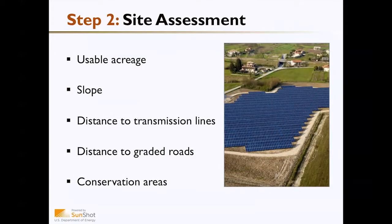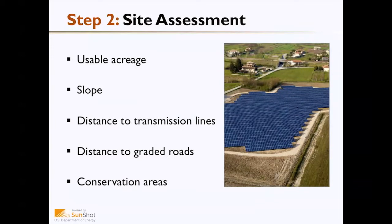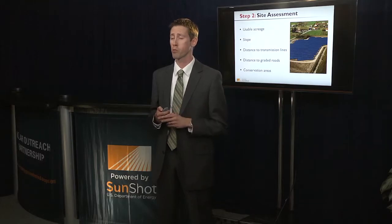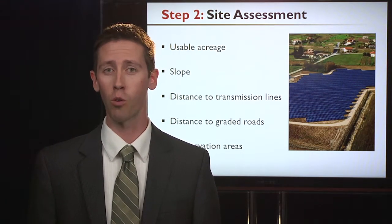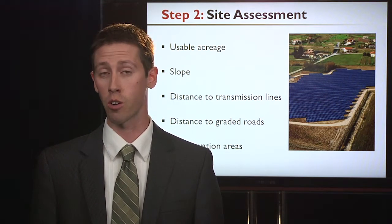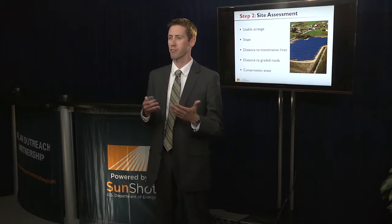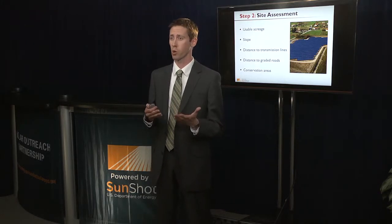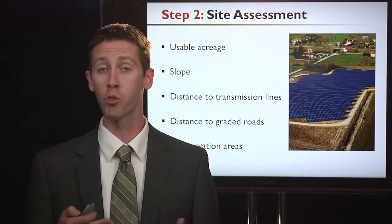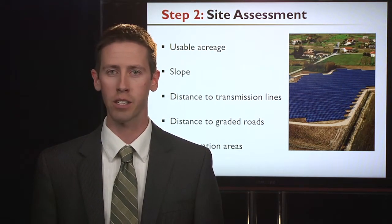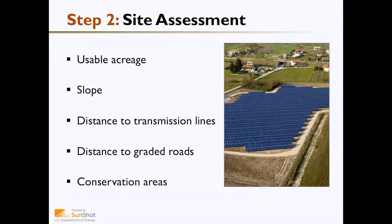For ground-mounted systems, consider usable acreage — is there enough land for a system sized appropriately for the load? The land should be relatively flat, as flat terrain eases both installation and performance. Distance to transmission lines matters because the further lines must run from the system to the distribution network, the more expensive the project. Sites already adjacent to existing power lines are preferable. Distance to graded roads is also important, since equipment and installation crews need access during construction and for maintenance, and existing roads lower the installed cost. Finally, consider conservation areas, wetlands, and environmentally protected areas, ensuring the system won't intrude on those areas and maintains safe buffer zones.